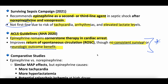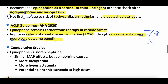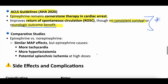Comparative studies on epinephrine versus norepinephrine show similar MAP effects, but epinephrine can cause more tachycardia, elevated lactate, and potentially some splanchnic ischemia — which is why norepinephrine is our first line drug compared to epinephrine.